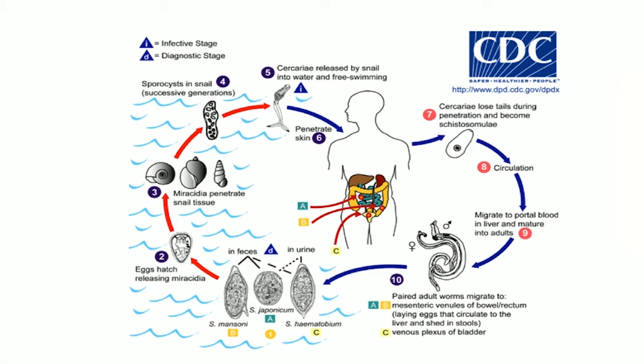How do you get schistosomiasis? You get these cercariae swimming around in fresh water. Lake Victoria is a famous place with tons of parasites. These fork-tailed cercariae penetrate your intact skin and enter the bloodstream. They love the liver and spleen, going to the portal system and eventually setting up shop in the mesenteric venules. One particular organism, schistosoma haematobium, found in northern Africa, prefers the venous plexus of the bladder.